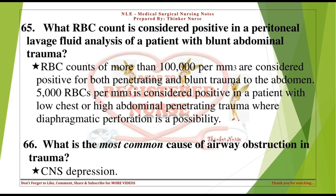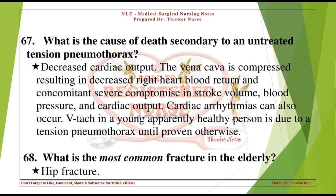What is the most common cause of airway obstruction in trauma? CNS depression. What is the cause of death secondary to an untreated tension pneumothorax? Decreased cardiac output. The vena cava is compressed, resulting in decreased right heart blood return and severe compromise in stroke volume, blood pressure, and cardiac output. Cardiac arrhythmias can also occur. V-tach in a young apparently healthy person is due to a tension pneumothorax until proven otherwise.